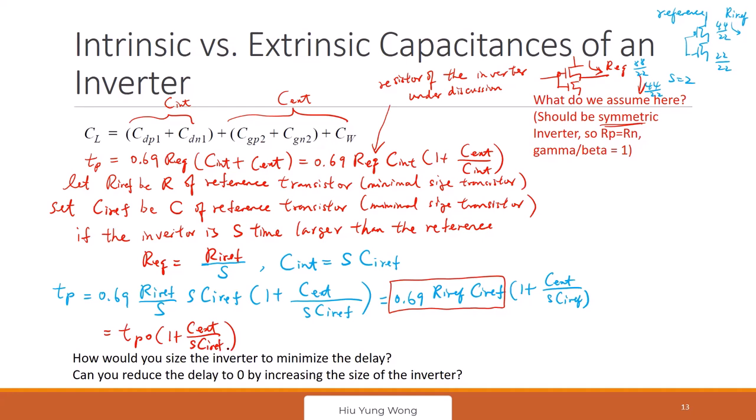So how would you minimize the delay? How would you minimize the delay? Well, I can make S very large. I made my transistor size very, very large. By making it to zero. So in this case, you will see that, oh, looks like I can do that. But that is not that simple.